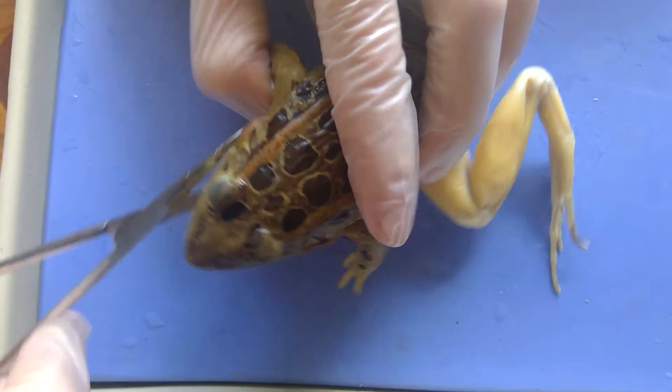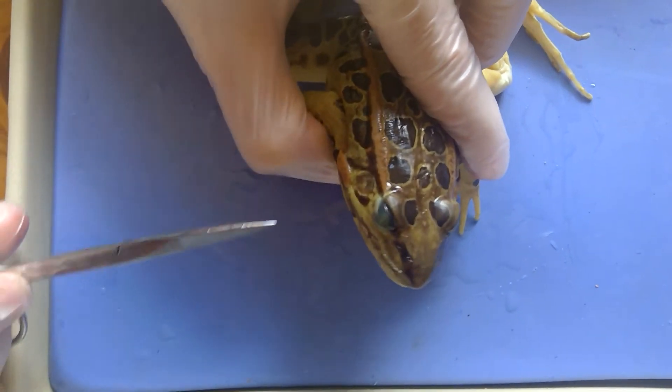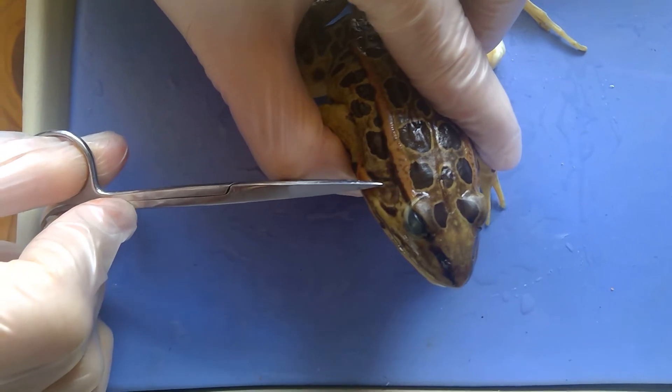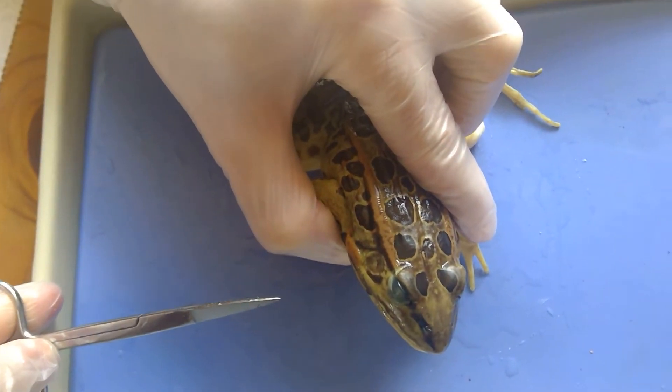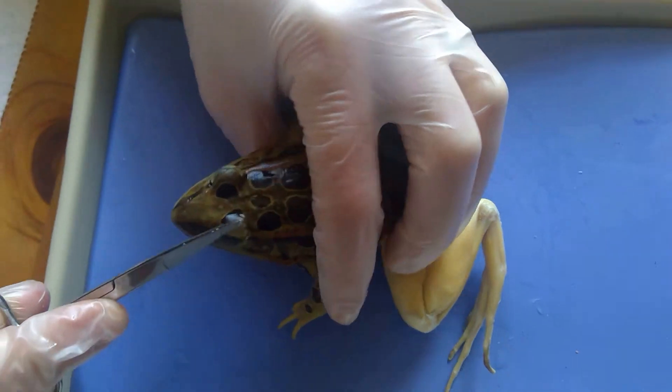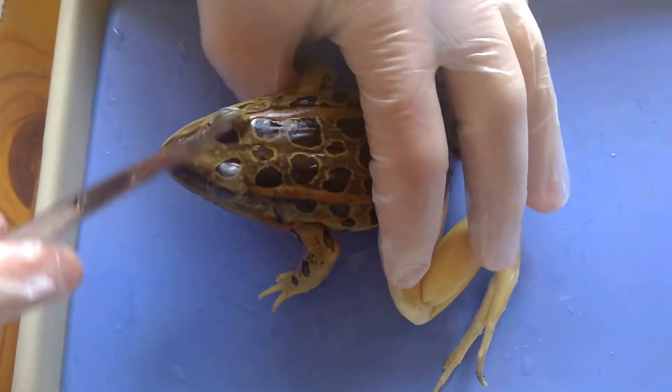So the first thing I'm going to do is identify some of the things outside the mouth. This circle right here, that's actually the ear of the frog. It's just called the tympanum. So there's a tympanum here and a tympanum here.